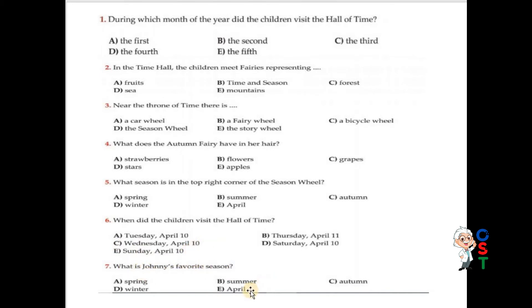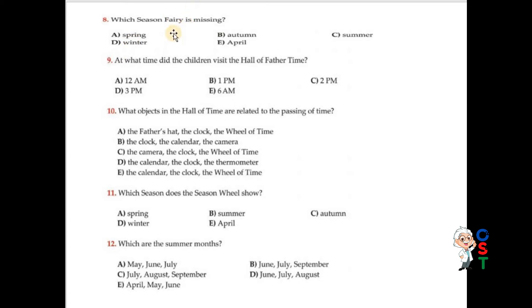Question number seven: What is Johnny's favorite season? Options are spring, summer, autumn, winter, and April. The answer is winter, because he likes skiing, which is a sport played in winter. D is correct. Question number eight: Which season fairy is missing? Spring — the spring fairy has gone somewhere else. A is correct.